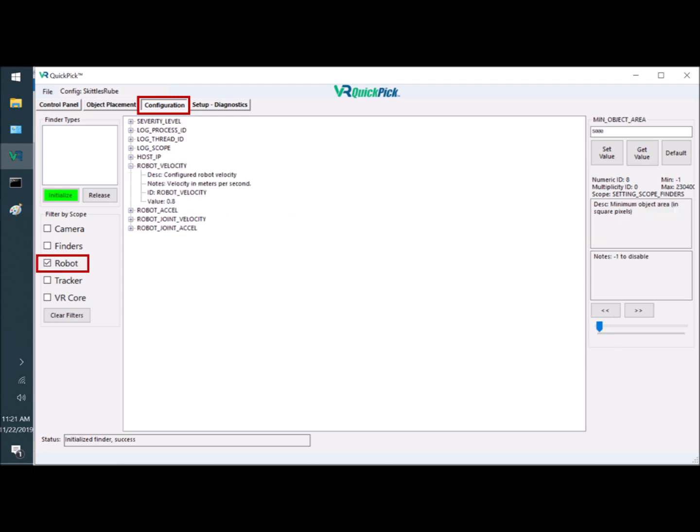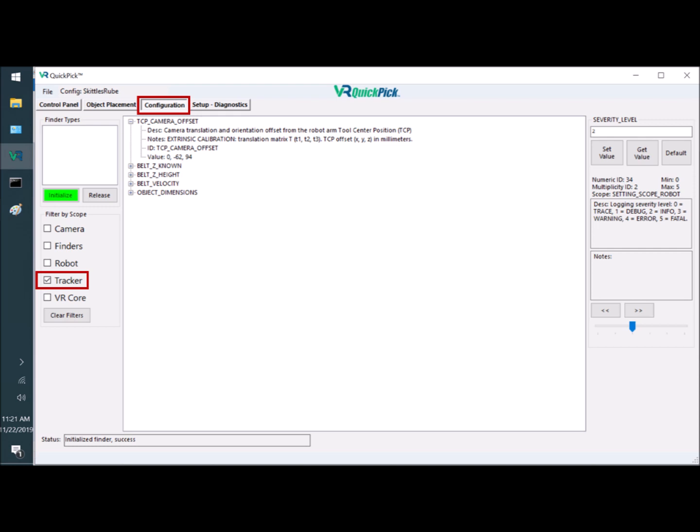The Robot Configuration gives you control over the robot servoing, with settings for velocity, acceleration, and other parameters. The tracker settings enable you to configure the tool center position offset from the camera. Also, you can set any known parameters that will speed object processing, such as conveyor speed or object dimensions. These are not required, but are helpful if known.